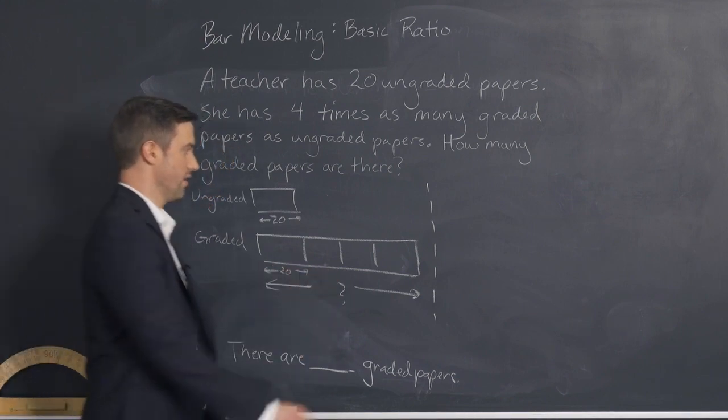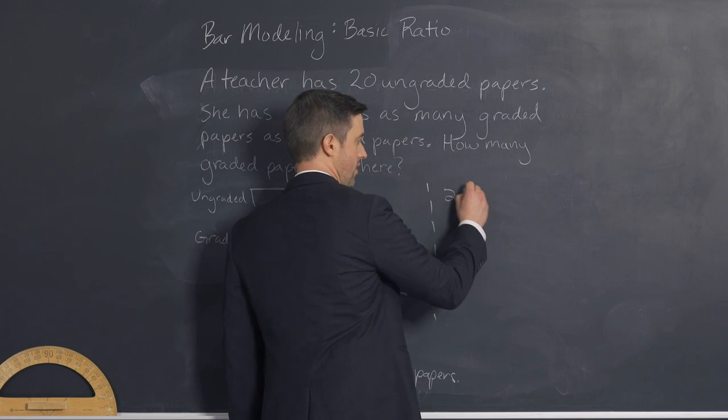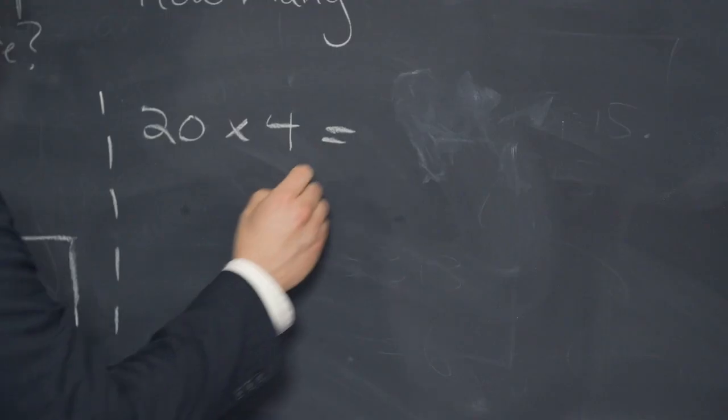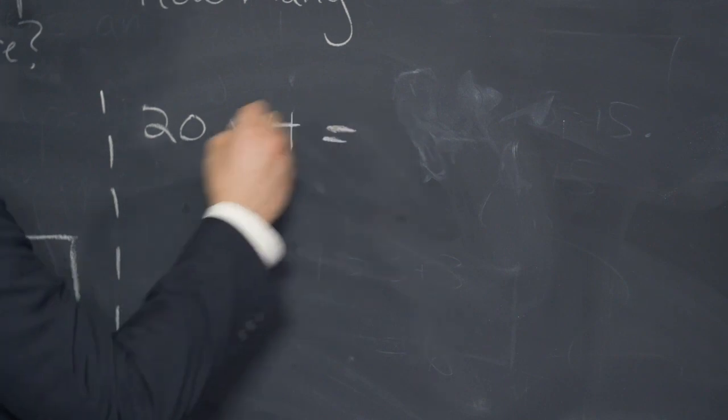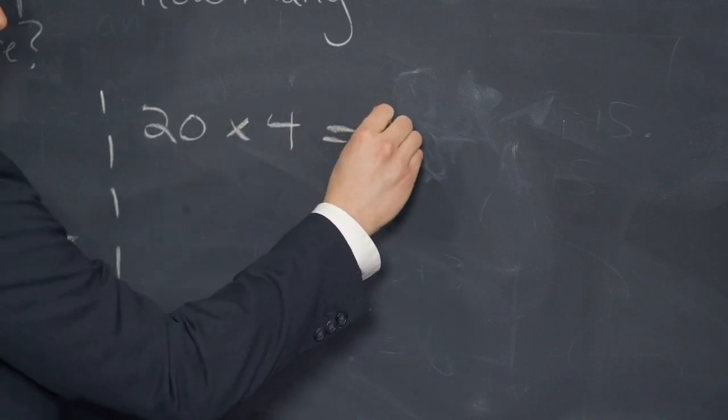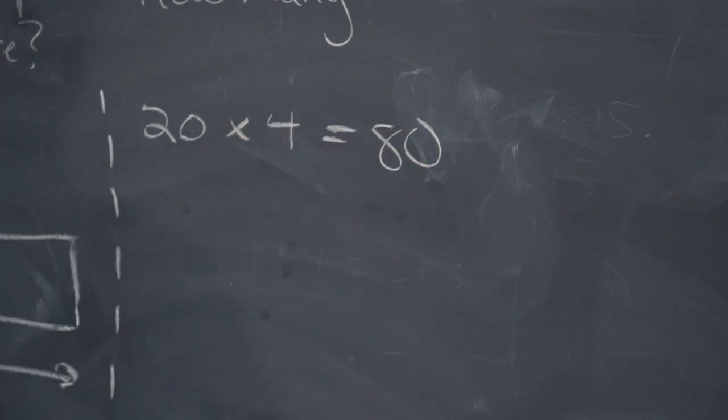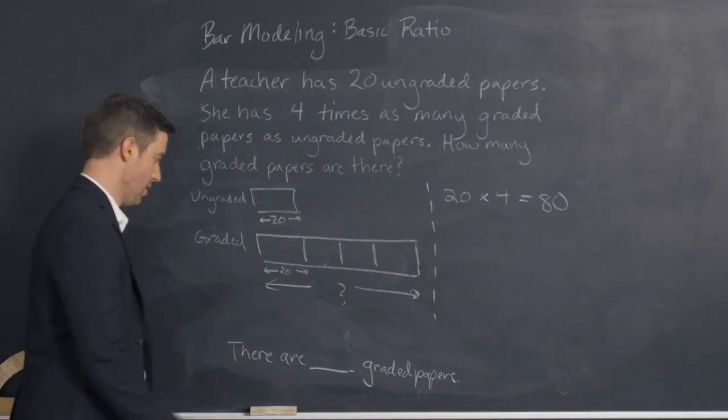So the students from there can say that 20 times 4 is equal to the same thing as 2 times 4 times 10, or just let's keep it simple. 20 times 4 is 80. So there are 80 graded papers.